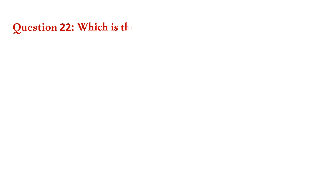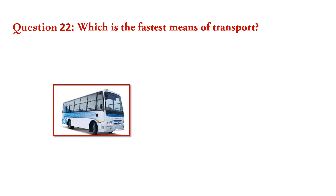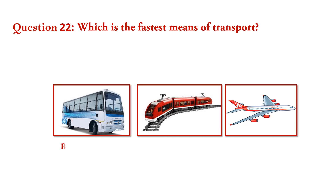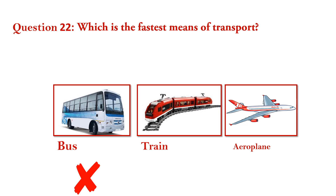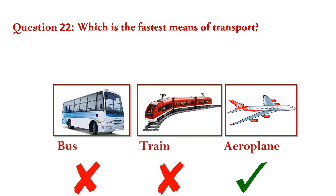Question number 22. Which is the fastest means of transport? Bus — wrong. Train — wrong. Aeroplane — right. Answer is aeroplane.